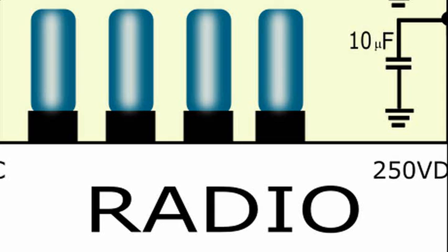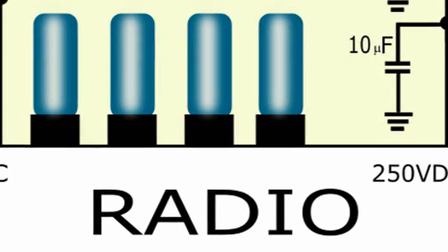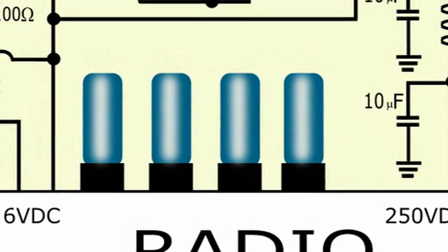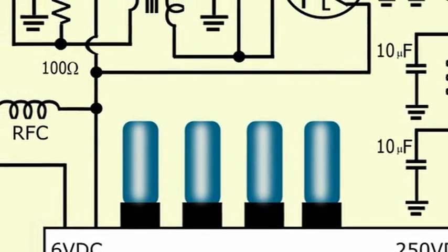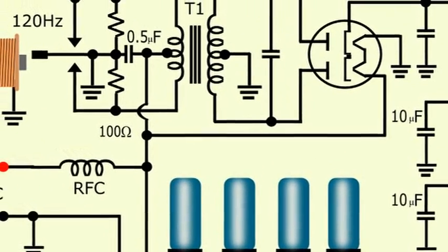We also know that a radio receiver requires several stages of amplification using electronic vacuum tubes, which require high voltages to operate, around 250 volts.